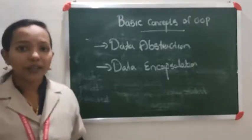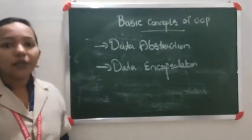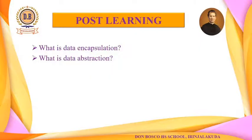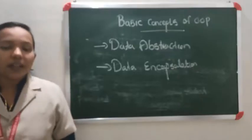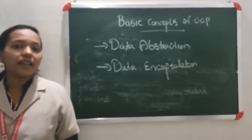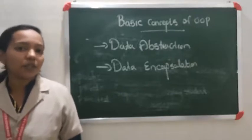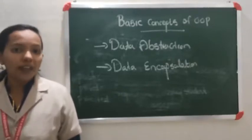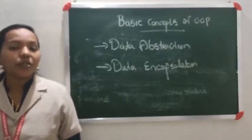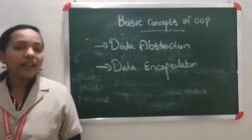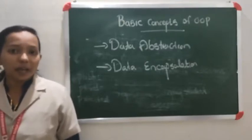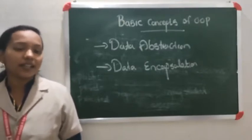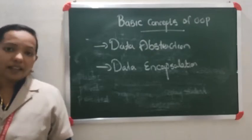Hope you understood the concept of the four basic concepts of object-oriented programming: object, class, data abstraction, and data encapsulation. You want to write two questions in your notebook as homework: what is data abstraction, and what is data encapsulation? Some more remaining basic concepts we will discuss in the next video. Thank you.